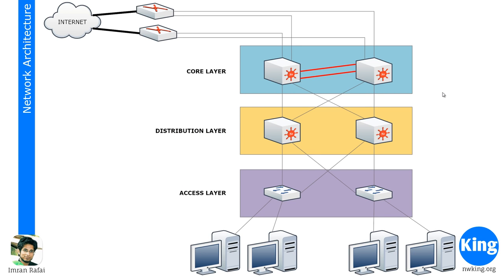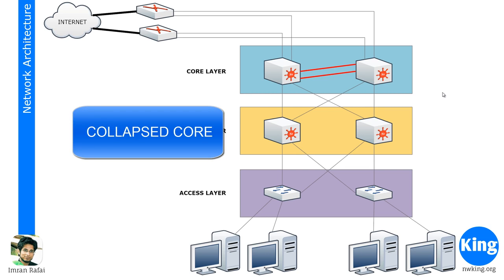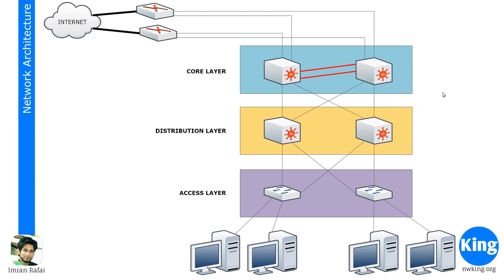Cisco has two types of architectural approach. One is the Cisco three-tier architecture, and then we have something called a collapsed layer architecture. What you see on the screen is the three-tier architecture because it has three different layers: the access layer, the distribution layer, and the core layer.